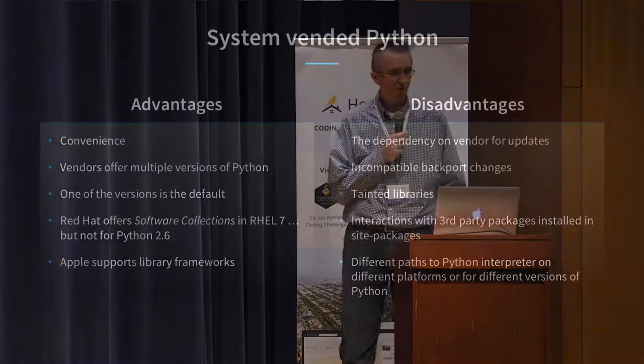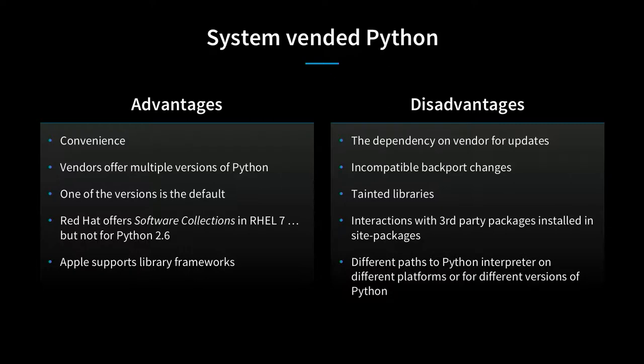What we decided to do was look at our options. It's really appealing to use something the vendor provided—for example, Red Hat provides the software collection, so you can install Python 3. But we still had applications running on 2.6 that would still have to run on 2.6 for a considerable period of time. Red Hat 7 doesn't have a software collection for 2.6, so you have to build it yourself. Once you're building it yourself anyway, why not just build it yourself and control your life completely?